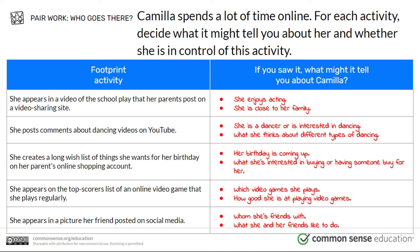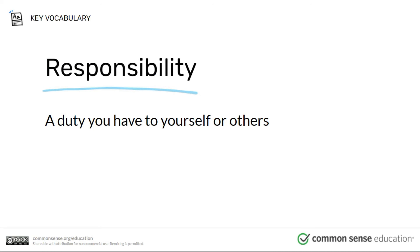Not everything we put online will be deleted and disappear. So we have to be very careful and pay attention to what we're posting about ourselves and about other people. Given that a digital footprint lasts a long time and we're not always in control of what becomes part of it, there are responsibilities we have when being online. A responsibility is something we should think about before we act. We have a responsibility to ourselves and to others before we do something online — anything you post can affect you or other people.